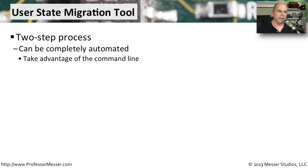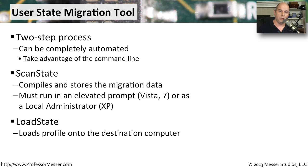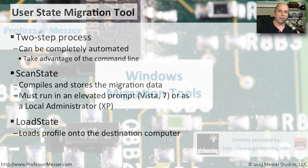Because the User State Migration Tool is command-line driven, there are many different options available, and it's a two-step process to perform migrations. The first step is called scan state, which compiles all your data and stores it elsewhere — you must run it as an elevated prompt in Windows Vista and Windows 7, or as a local administrator in Windows XP. The second step is called load state, where you take all of that saved profile information and load it into the new operating system. By combining scan state and load state, you can automate the entire migration process from the command line.